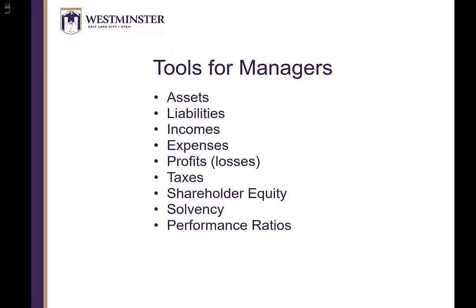Those metrics have to do with assets, liabilities, incomes, expenses, profits or losses, taxes, shareholder equity, solvency of the company, and various performance ratios. We'll focus for a moment on the performance ratios because those are ones that, regardless of their nominal values, can help us compare one firm or one division within a firm's performance versus another.